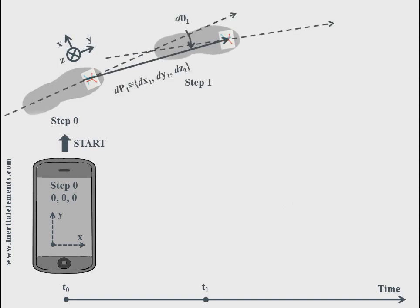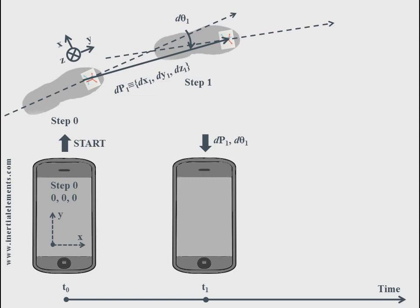The Displacement, DP1, and the Heading Change, D-Theta1, are transmitted to the application platform at the first detected step.